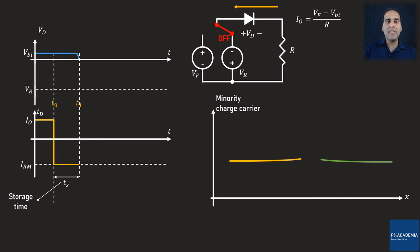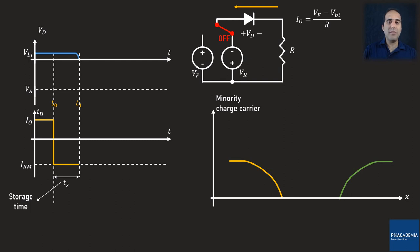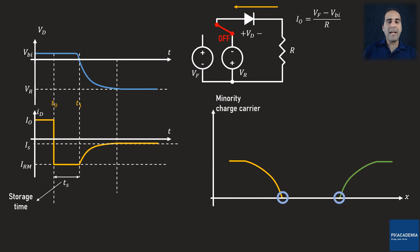After T1, the discharge of the minority charge carriers on both sides continues, and as time passes, fewer mobile minority charge carriers remain at the edge of the depletion region. Therefore, the amplitude of the reverse current exponentially reduces. Once the edges of the depletion region are depleted from the minority charge carriers, the diode has reached the steady-state reverse bias. Hereafter, only the saturation current passes through the diode.